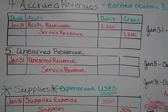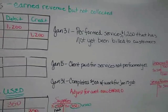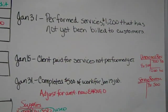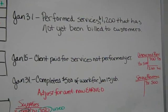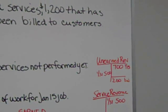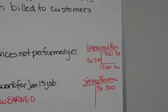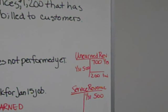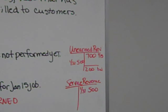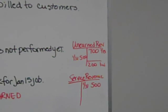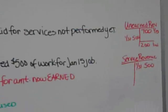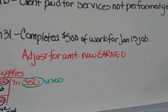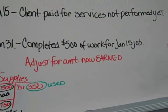The fifth type is to adjust for unearned revenue. We dealt with this a little bit in chapter 2, where we have an entry that says a client paid for services not yet performed. That is considered unearned revenue. If the services were $700 that we performed, our T-account would report a credit to unearned revenue for $700. On January 31st, we completed $500 of the work for that January 15th job.